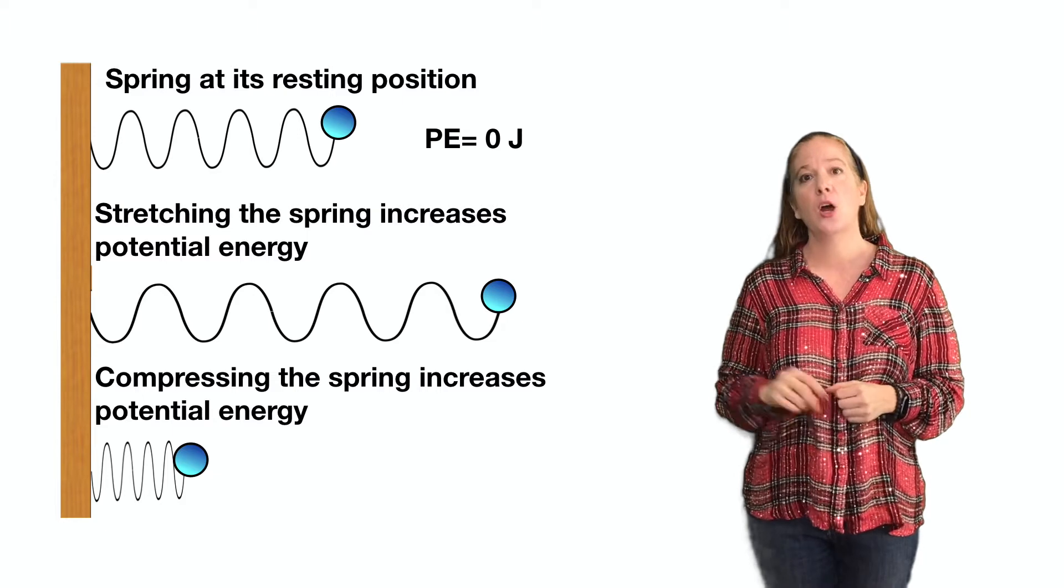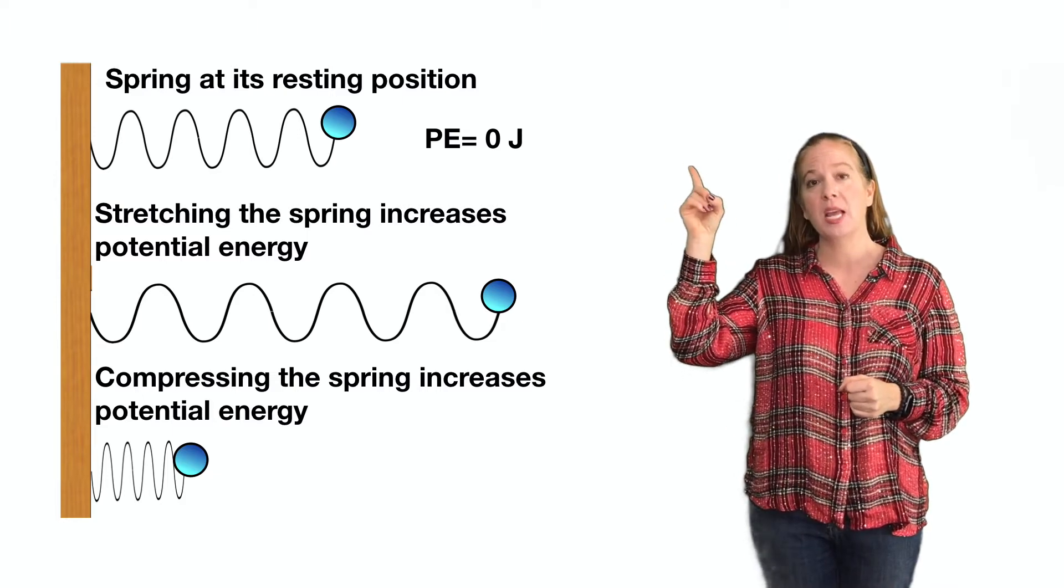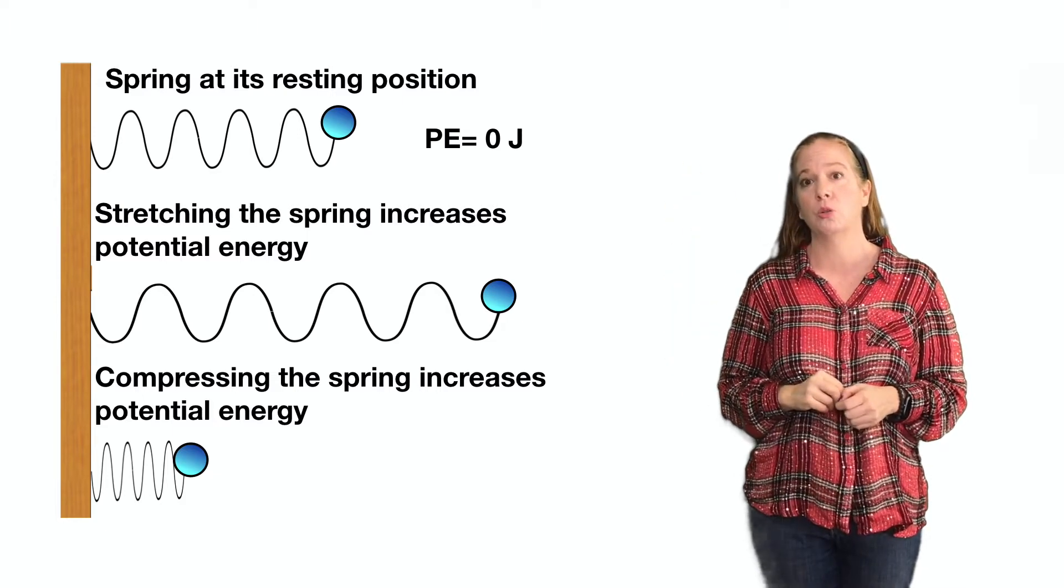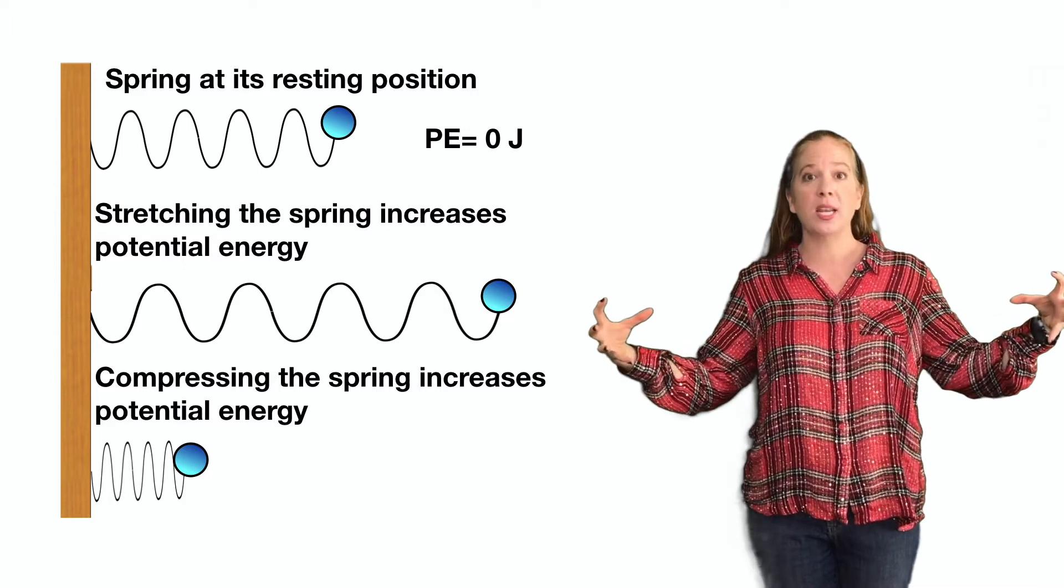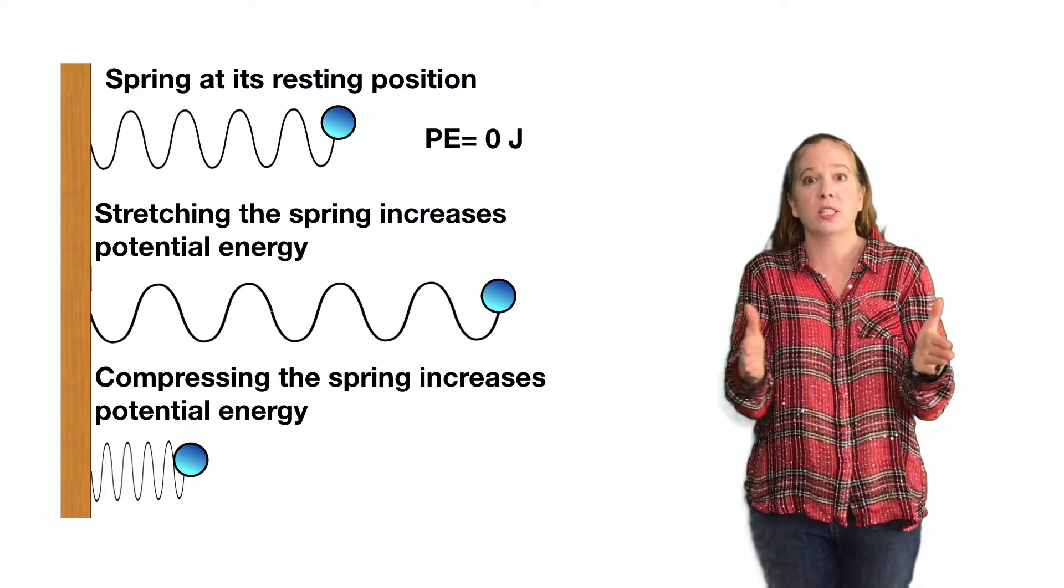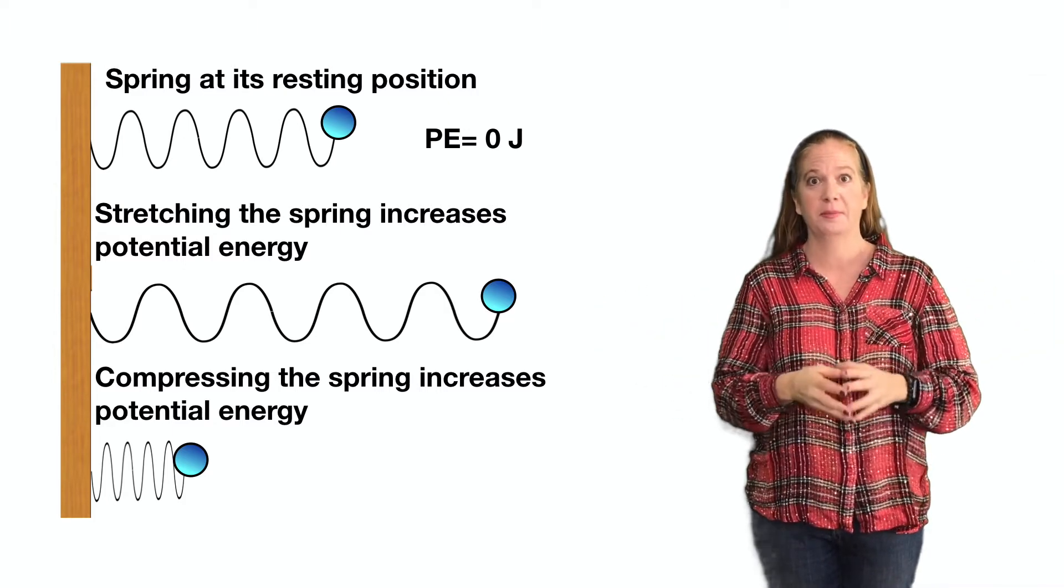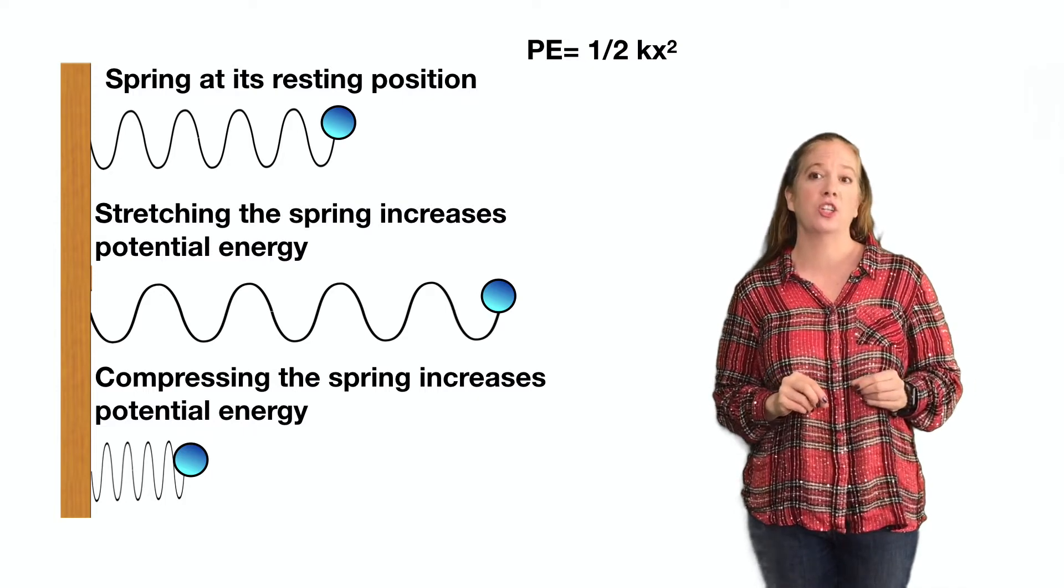So what we see here, the spring at its resting position has a potential energy of 0 joules. Stretching that spring increases potential energy and so does compressing that spring.